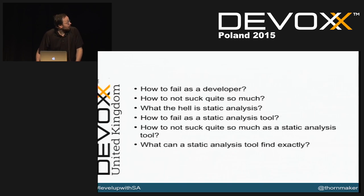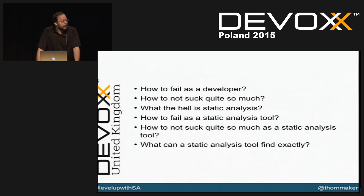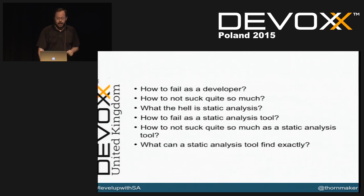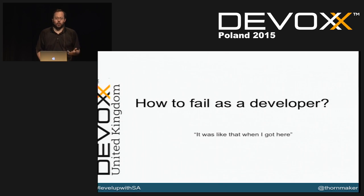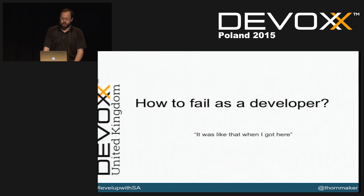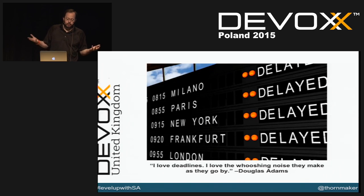I've broken the outline into a few basic categories, keeping it really simple and straightforward. The first topic is how to fail as a developer. There are lots of things that can go wrong — these are just a few of the common ones developers encounter, things we all need to watch out for regardless of our job.